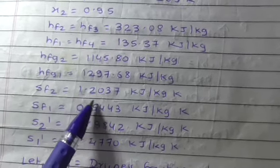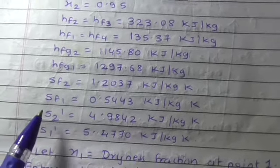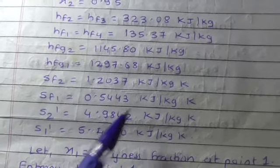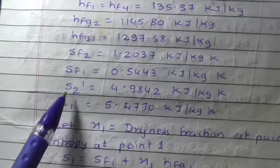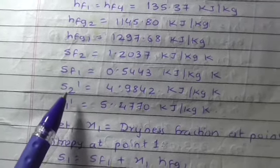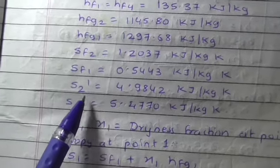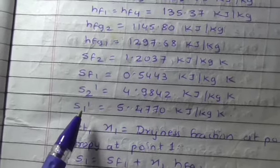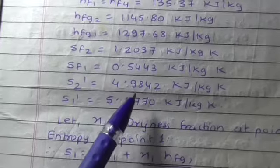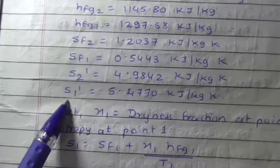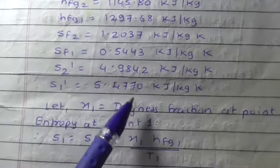SF2 equals 1.2037, SF1 equals 0.5443. The total entropy values are given - total entropy will be on the saturation curve. S2 dash at 30 degrees Celsius is 4.9842, and S1 dash is 5.4770.